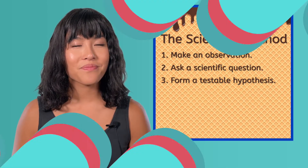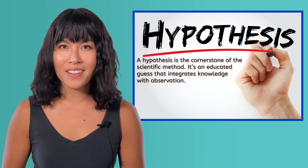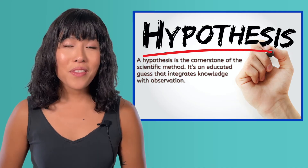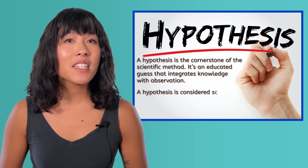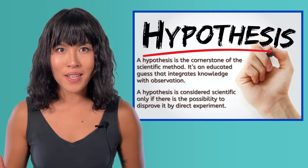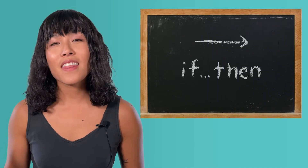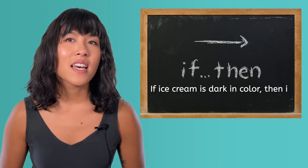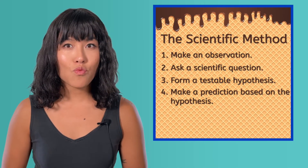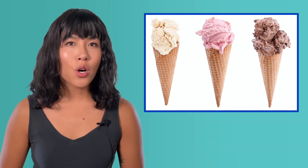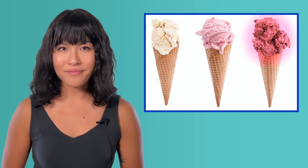Form a testable hypothesis. A hypothesis is the cornerstone of the scientific method. It's an educated guess that integrates knowledge with observation. A hypothesis must be testable, and there is a much stronger requirement it must meet: a hypothesis is considered scientific only if there is the possibility to disprove it by direct experiment. Quite often, hypotheses are written as if-then statements. For example, I might hypothesize: if ice cream is dark in color, then it will melt faster. Step four of the scientific method says we're ready to make a prediction based on the hypothesis, so we can predict that dark colored ice cream will melt faster than light colored ice cream. It's important to note that a hypothesis doesn't have to be right — we learn just as much from proving a hypothesis wrong as we do from proving it right. But a hypothesis does have to be testable and provide measurable results.